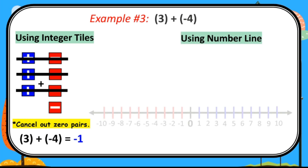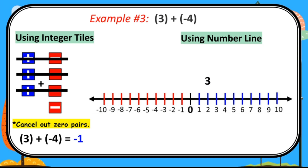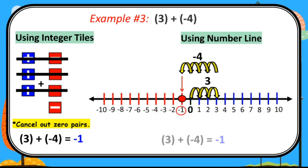Using number line: the first addend is positive 3. Start at 0 and move 3 units to the right — 1, 2, and 3. Then the next addend is negative 4, so we need to move 4 units to the left, starting from where we ended on the first addend — 1, 2, 3, and 4. The corresponding integer is negative 1. Therefore, positive 3 plus negative 4 equals negative 1. Same answer as the integer tiles.